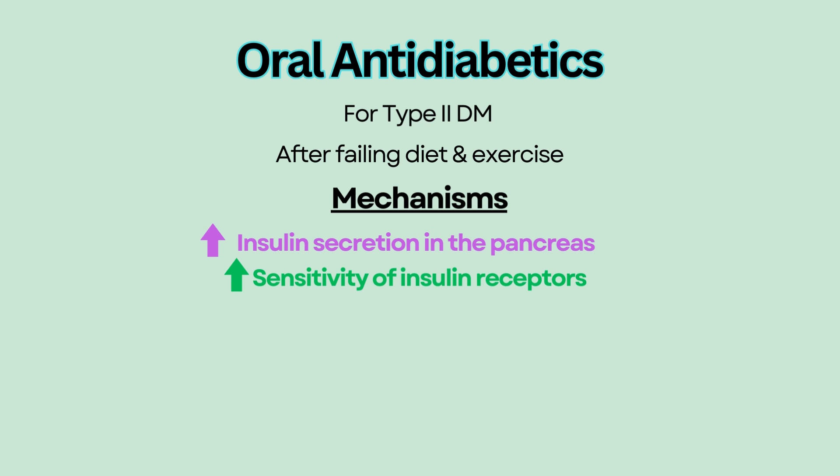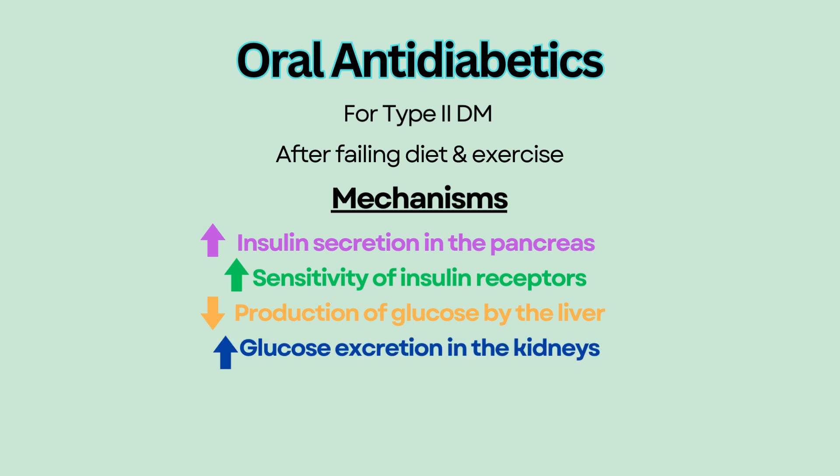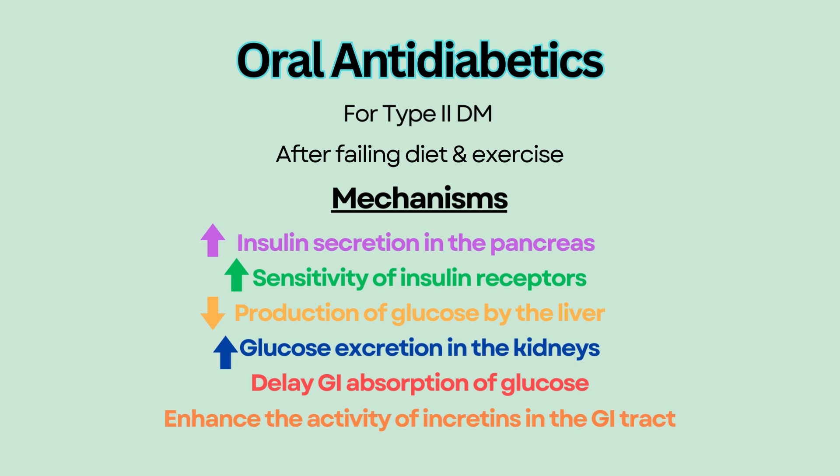They can also decrease the production of glucose by the liver, promote glucose excretion in the kidneys, delay GI absorption of glucose, and enhance the activity of incretins in the GI tract. Incretins are hormones released from the gut in response to food to induce insulin secretion. There are several categories of oral anti-diabetics.